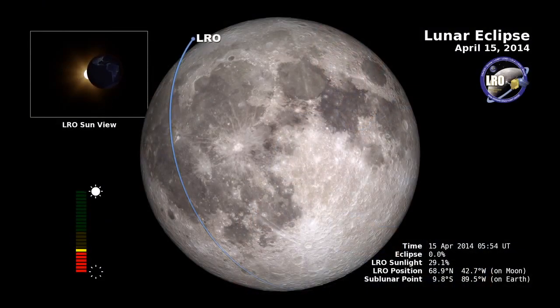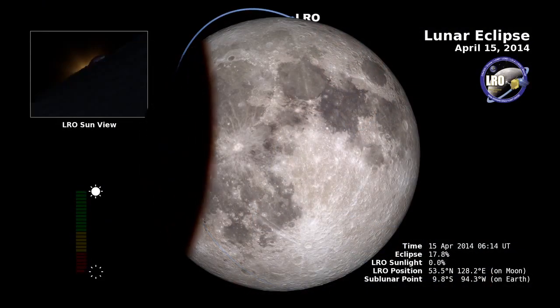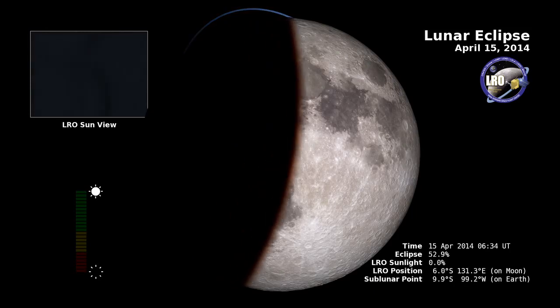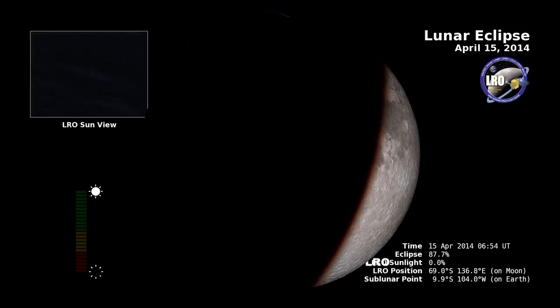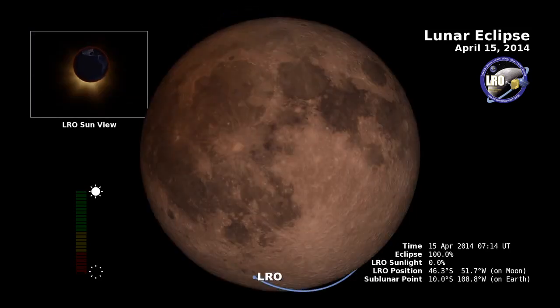So the eclipse is going to affect LRO in one very important way. LRO's batteries are charged by solar energy, and so during an eclipse, the moon and the LRO spacecraft are going to be in darkness for a very long period of time, so the battery won't get to be charged. So we're going to be turning off all of the instruments in LRO so we don't drain the battery.